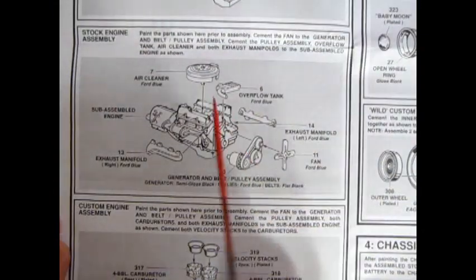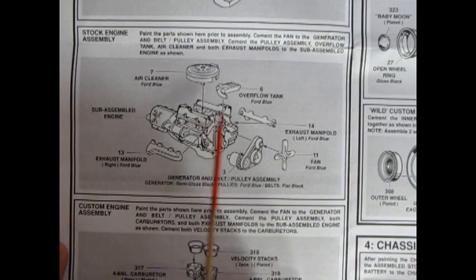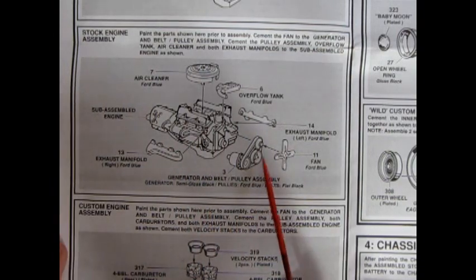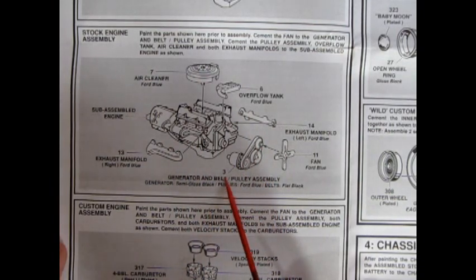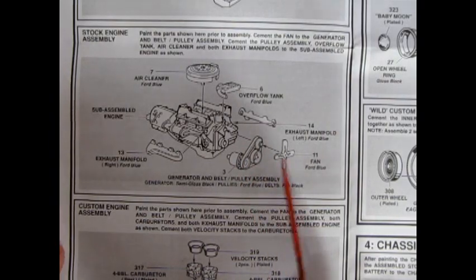We have our engine block, the continuation. There's the air cleaner going in. The overflow tank for your radiator. Your left and right hand side manifolds. And the entire engine generator and fan belt pulley assembly is one piece.